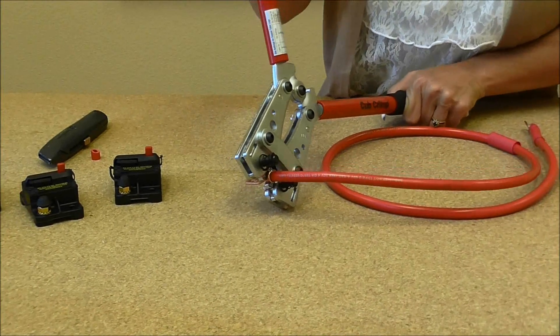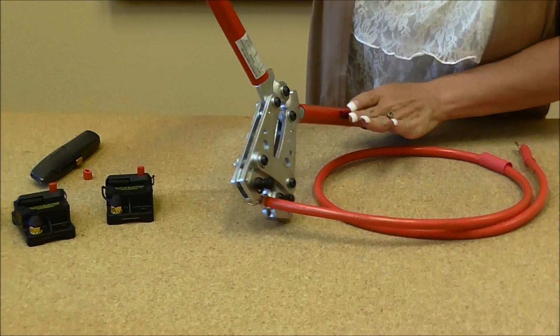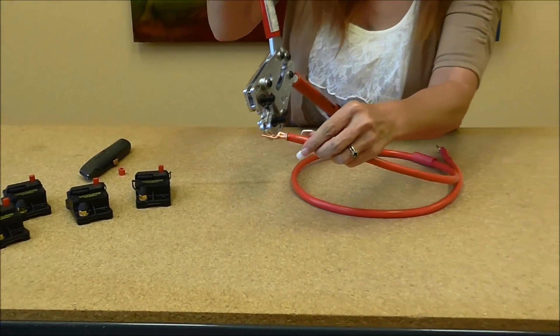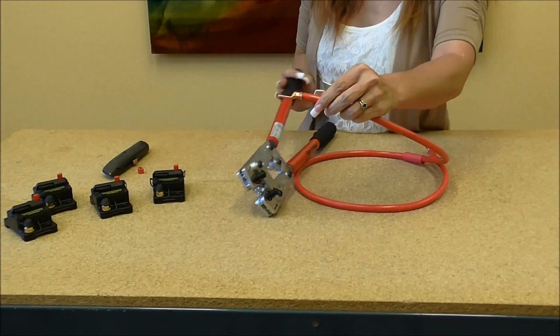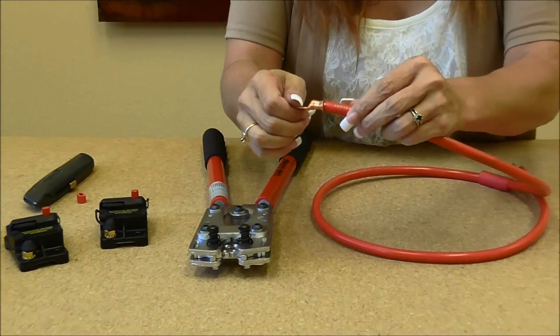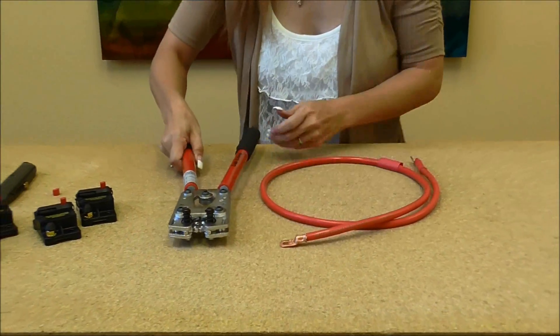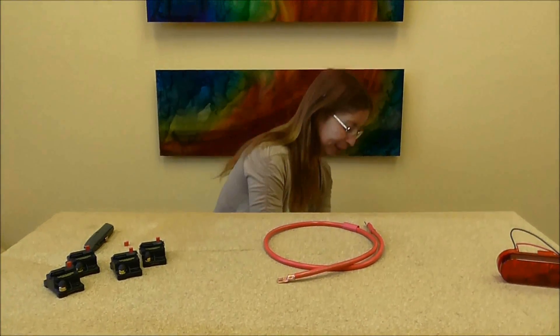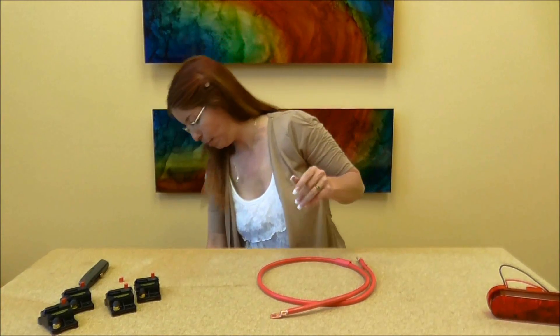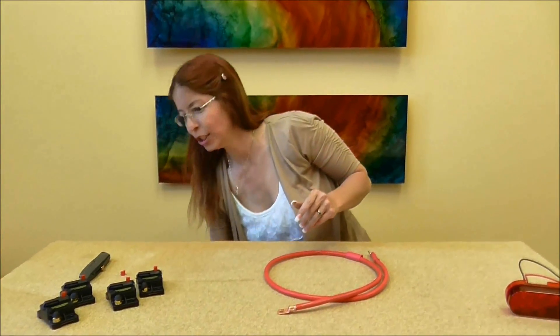Pull all the way back up, pull my lug out, and there you go. It does not get much easier than that. Now I'm going to put my crimper away and pull out my heat shrink gun.